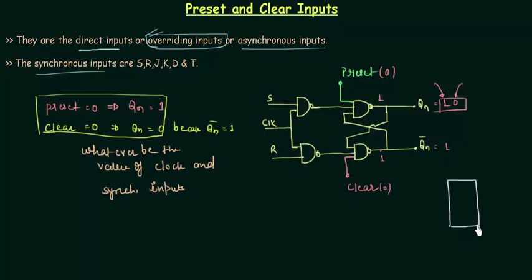This is the flip-flop. S, R, the clock, two outputs: QN, QN complement. And the preset will be given here with this bubble.